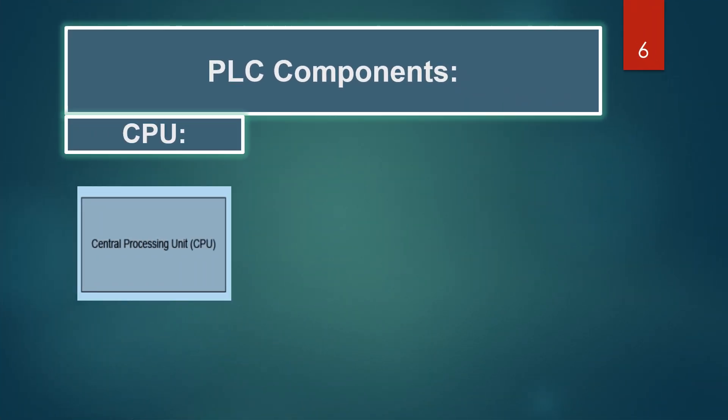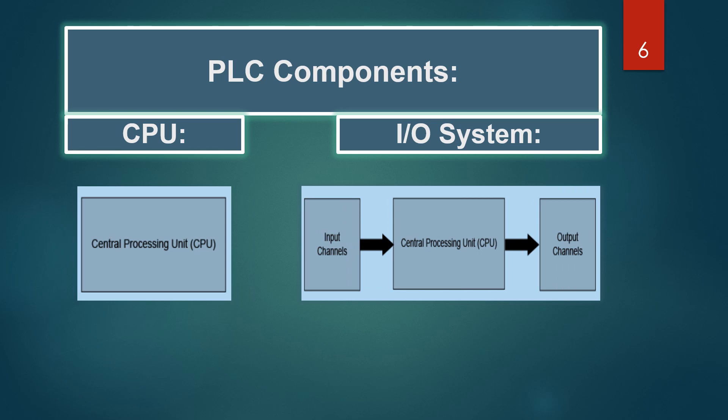CPU is the brain of the PLC that stores and runs the user program. The input-output system includes modules with I/O channels that connect to input devices such as switches and sensors, and output devices controlled by the PLC.